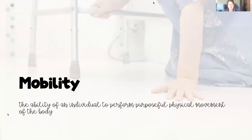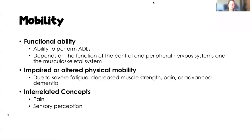Mobility is simply defined as the ability of an individual to perform purposeful physical movement of any part of the body. When we think about mobility, we usually use the word functional ability, and this is our ability to perform ADLs. The ability to perform ADLs does depend on function of the central and peripheral nervous systems and of our musculoskeletal system.